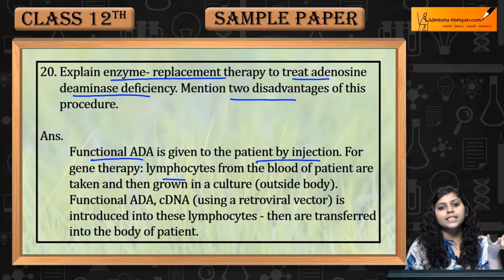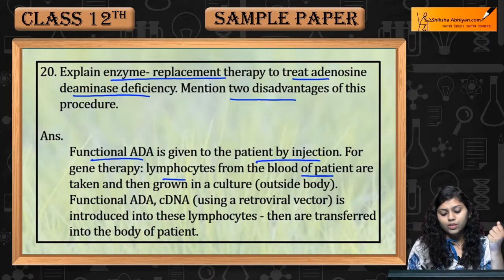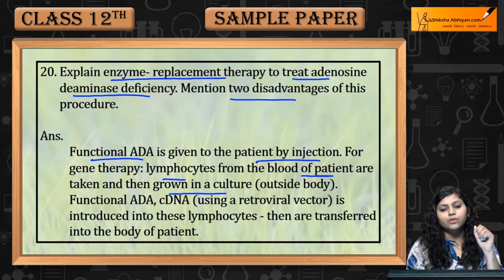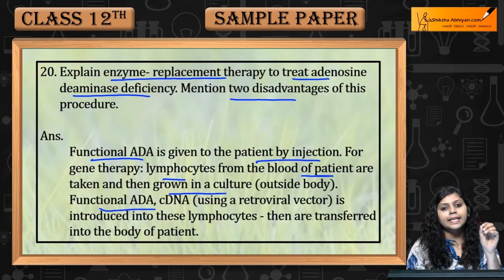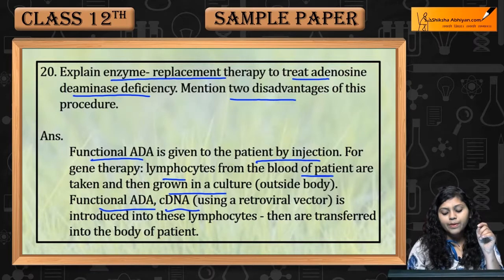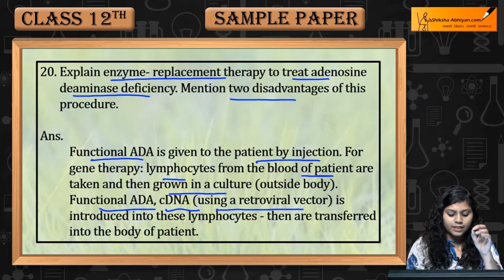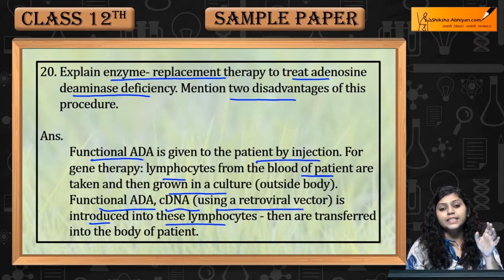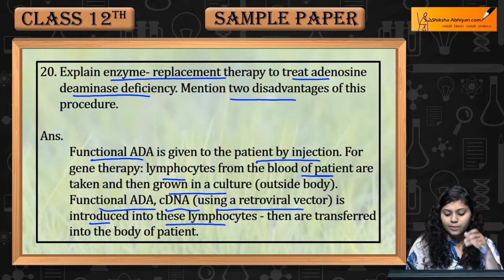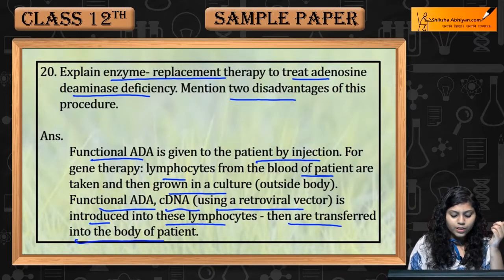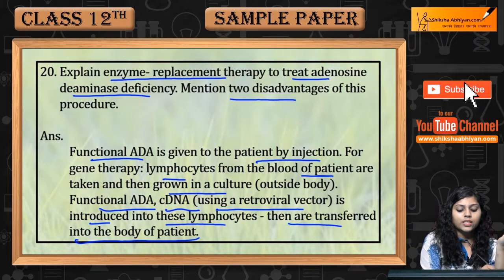For this, lymphocytes are taken from the patient's blood and are grown in culture outside the body. The complementary DNA of functional adenosine deaminase enzyme, using a retroviral vector, is introduced into these lymphocytes being cultured outside the body. They are then transferred back into the body of the patient.